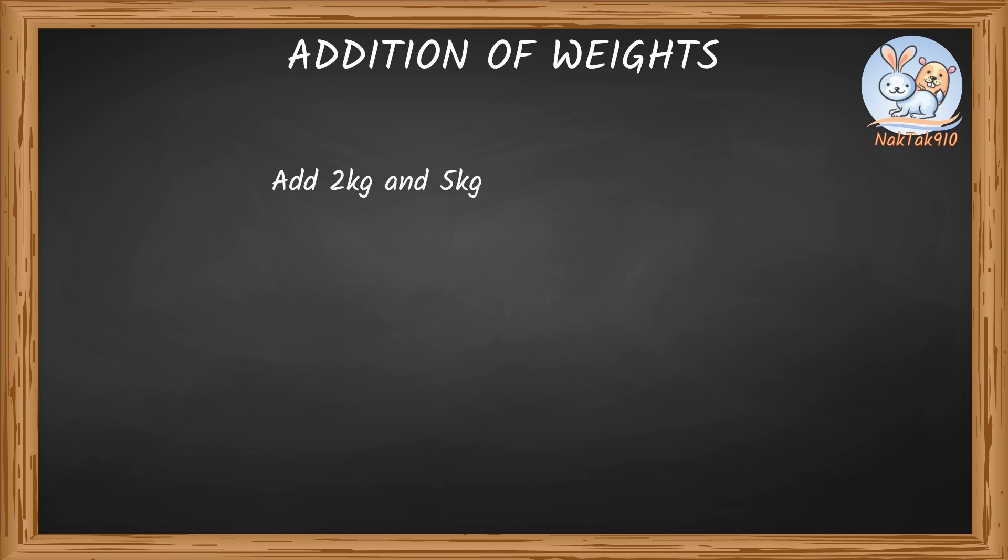Add 2kg and 5kg. This should be done the same way we do our whole numbers addition. 2 plus 5 equals 7, so 2kg plus 5kg equals 7kg. Add 1kg plus 15kg. 1kg plus 15kg equals 16kg. This is pretty easy.